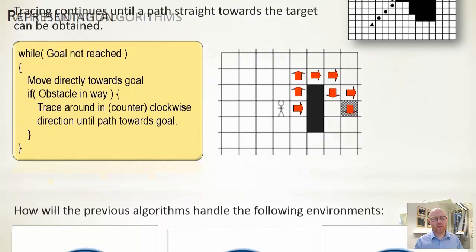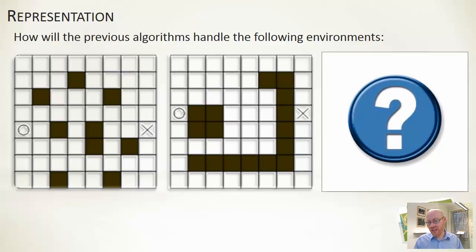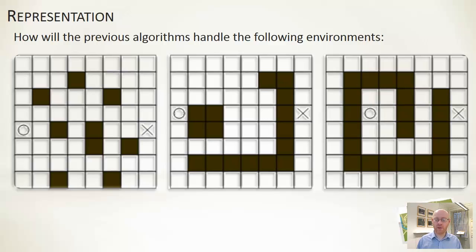These algorithms work quite well in open environments and will broadly get you to your target. However, in more complex environments, the random sidestep can get stuck, and the tracing approach — depending on which direction you trace — could go around the map in a very illogical, long route. Generally, these simple approaches work for open outdoor environments, but not for indoor environments with walls, gates, or doors that severely restrict movement.